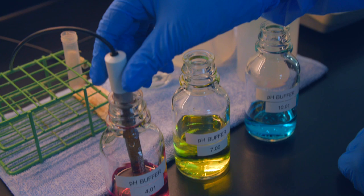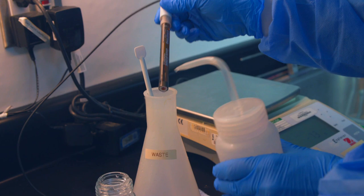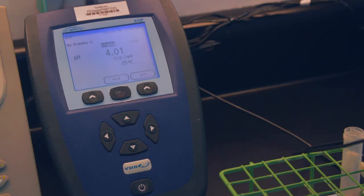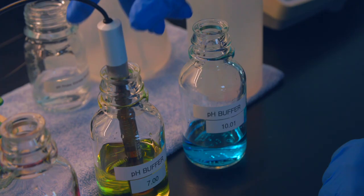Place the probe into the pH 7.00 buffer and gently stir to remove any bubbles from the tip of the probe. Press the read button, wait for the screen to say stable and take note of your pH value. Remove the probe from the solution and rinse with deionized water over a waste beaker.